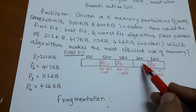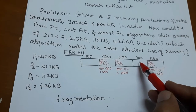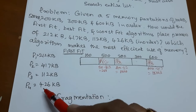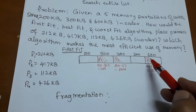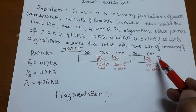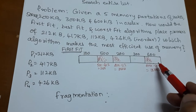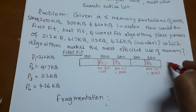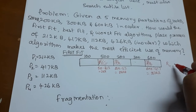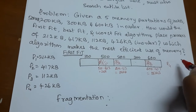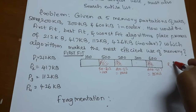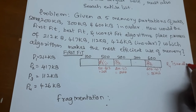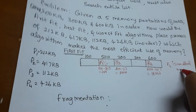The second and third partitions are already allocated. The fourth partition is also of lesser size compared to P4's memory requirement, and the fifth partition is already allocated. So P4 is not allocated with any memory — P4 is unallocated.